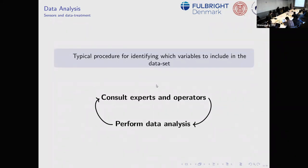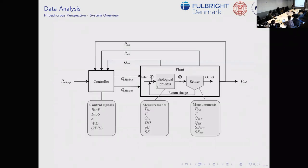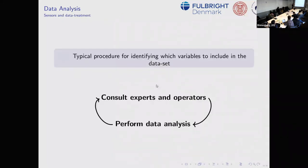The procedure for identifying variables goes in a circle: first we talk to experts — consultants and engineers who help the treatment facilities — then we perform data analysis, go back and present what parameters we've identified as important, and they say that makes sense or challenge why certain variables are or aren't included. That's how we slowly learn about the data.